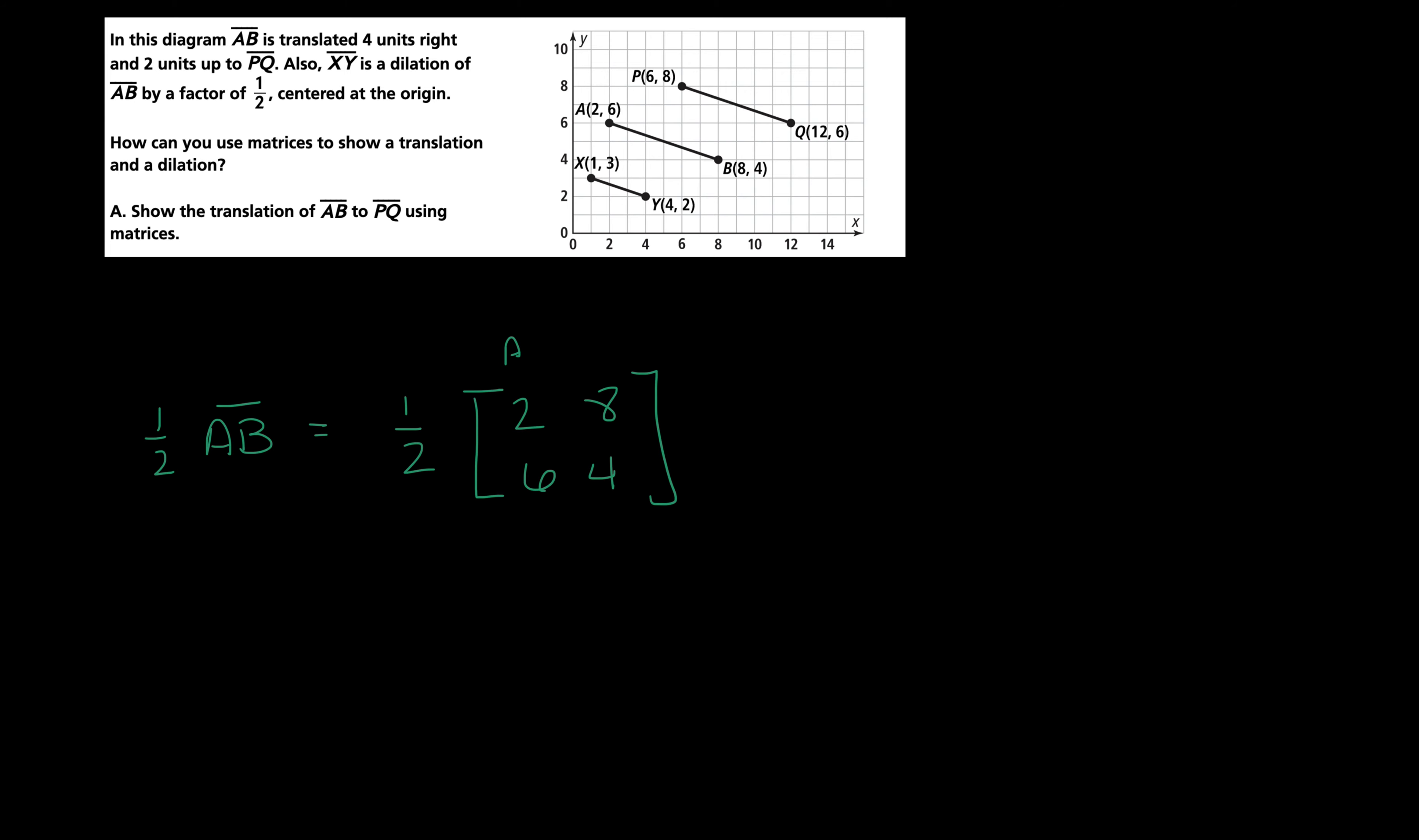Again, this is A, this is B, this is x's and my y values. And when I multiply each one of those by 1 half, 2 times 1 half is going to be 1, 8 times 1 half is going to be 4, 6 times 1 half is going to be 3, and 4 times 1 half is going to be 2. This right here represents the scalar. This right here is the pre-image. And this right here is the image.